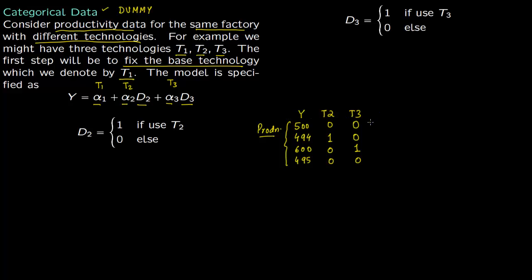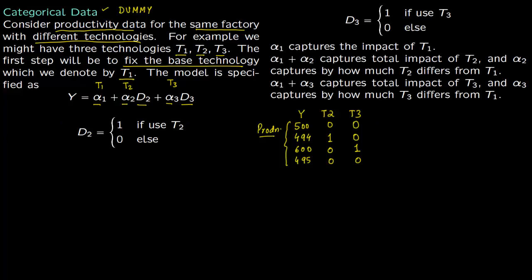When you compute alpha 1, alpha 2, and alpha 3 using regression, alpha 1 captures the impact of technology 1. Alpha 1 plus alpha 2 captures the impact of technology 2. If you are using technology 2, then D3 will be 0 and D2 will be 1, so Y equals alpha 1 plus alpha 2. If using technology 3, D2 is 0 and D3 is 1, so Y equals alpha 1 plus alpha 3.